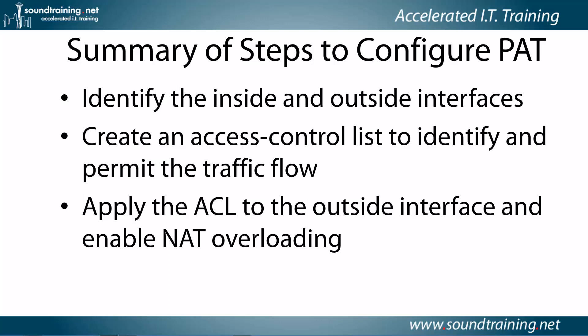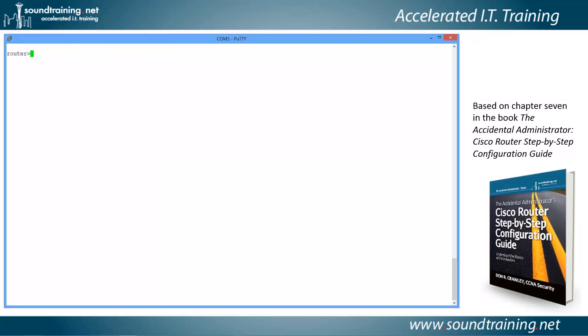Here's a summary of the steps — really not very complicated, just three or four steps. You identify the inside and outside interfaces, create an access control list to identify and permit the traffic flow, and then apply that access control list to the outside interface and enable NAT overloading, all in the same command. Pretty straightforward.